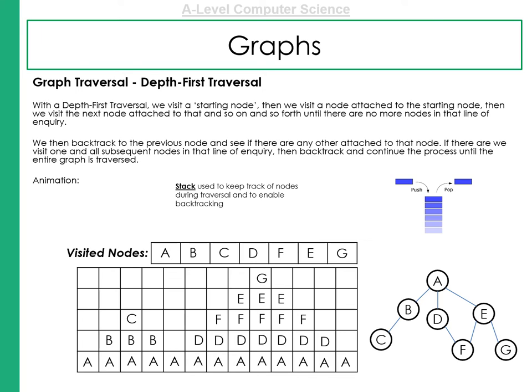We then, once we've visited all those, we can backtrack and see if there are any others attached. But this is not a binary tree. So in this example, A has three adjacent nodes. And we need to visit those in order.